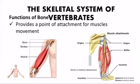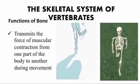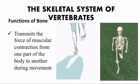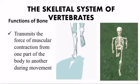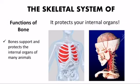Functions of bone: Bone provides a point of attachment for muscle movement. Bone transmits the force of muscular contraction from one part of the body to another during movement. Bone supports and protects the internal tissues of many animals — for example, the skull protects the brain, and the rib cage protects the lungs and heart.